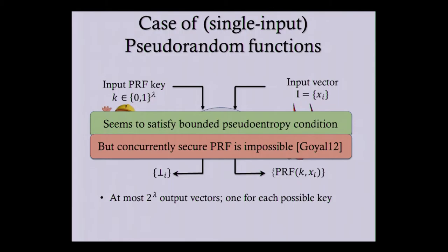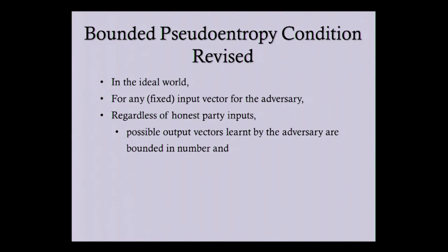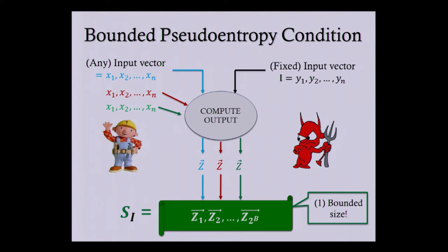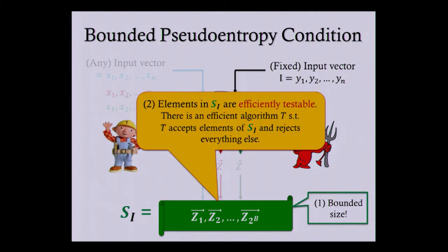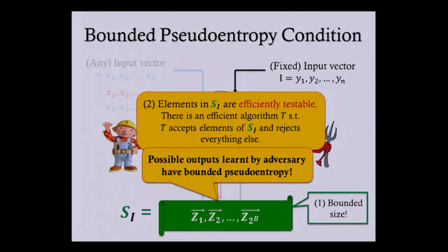So we make the condition stronger: along with the output vectors being bounded in number, we also require them to be efficiently testable. This means the set S is of bounded size and there exists an efficient algorithm T which accepts everything inside the set and rejects everything else. These two conditions together can be thought of as the adversary learning only a bounded amount of pseudo-entropy in the ideal world.